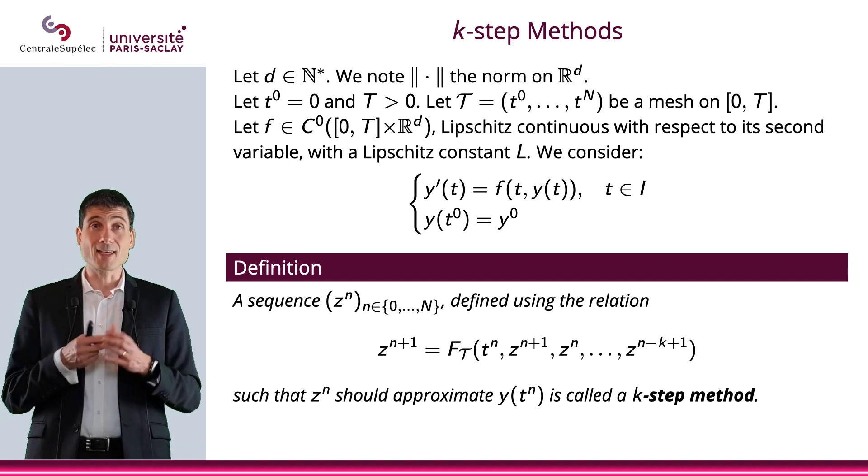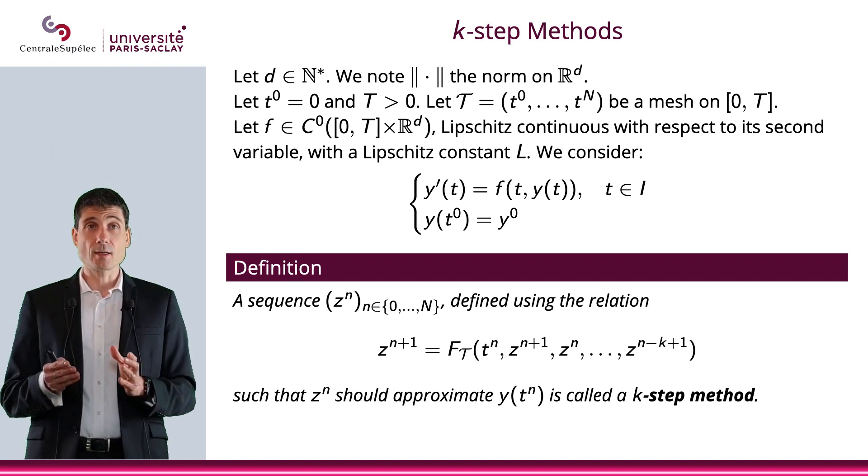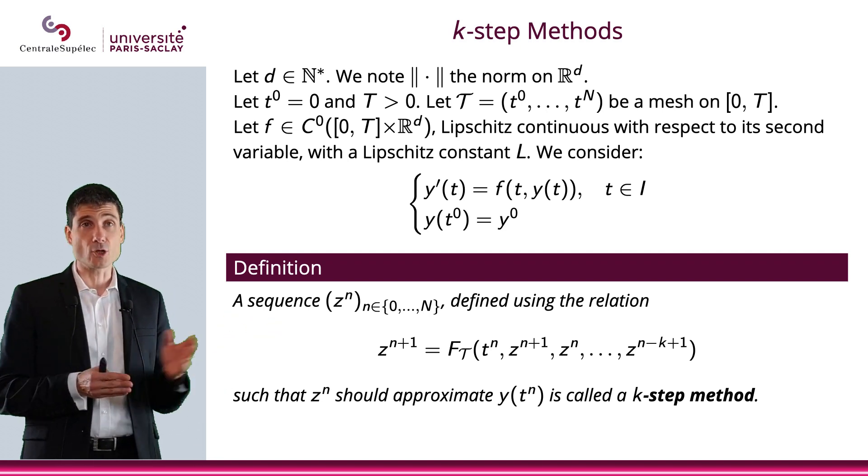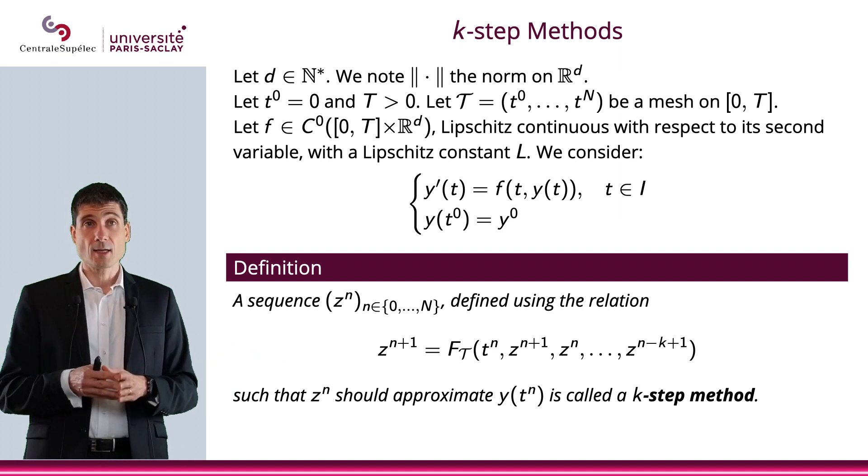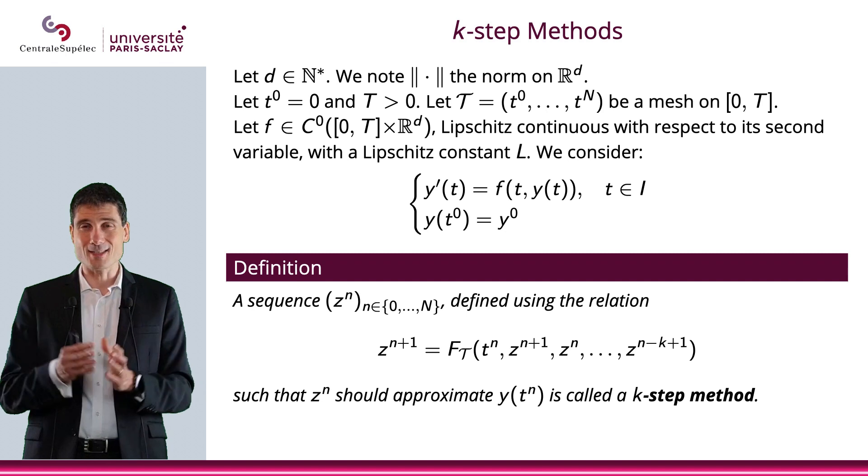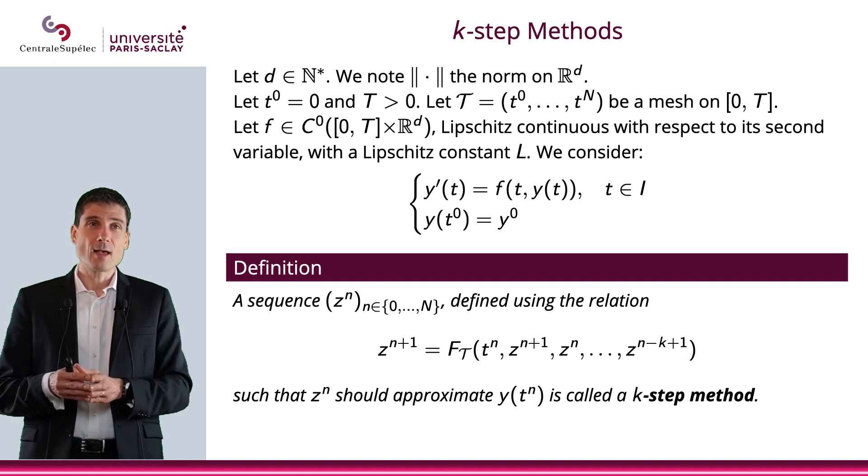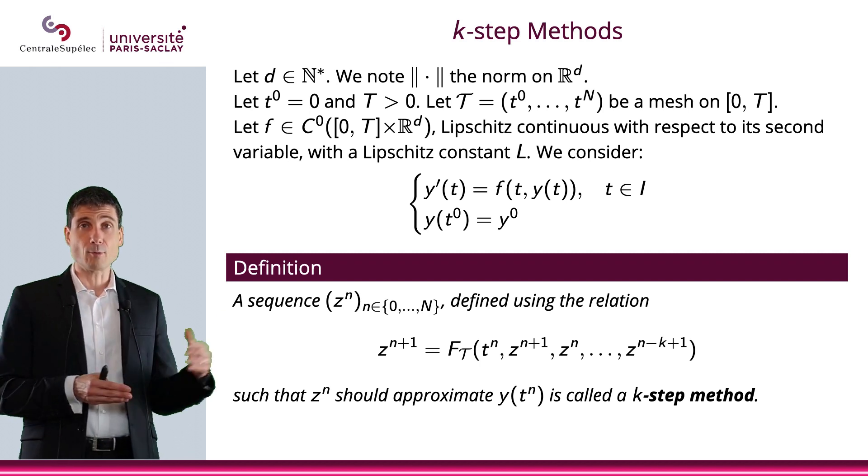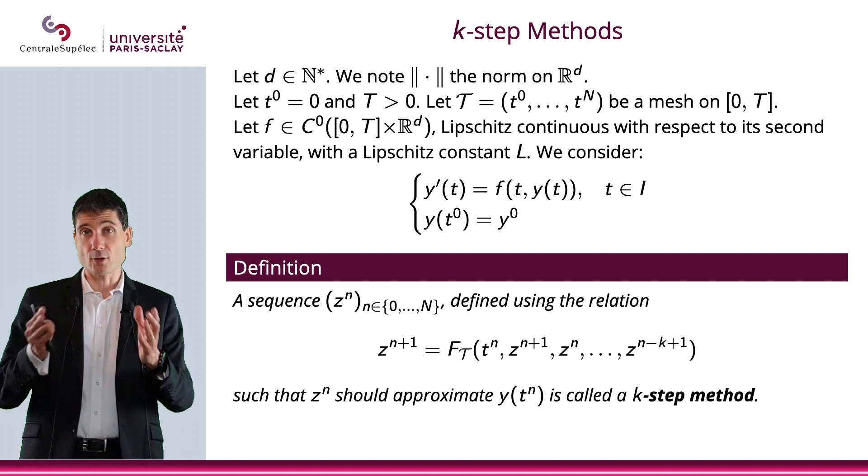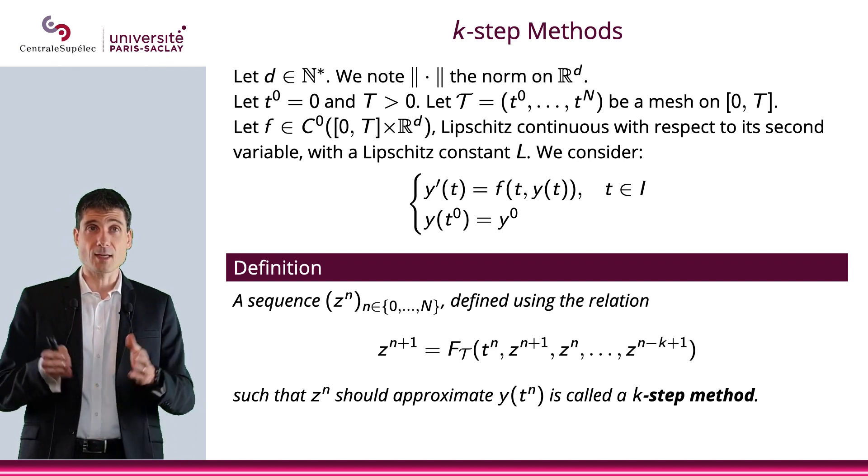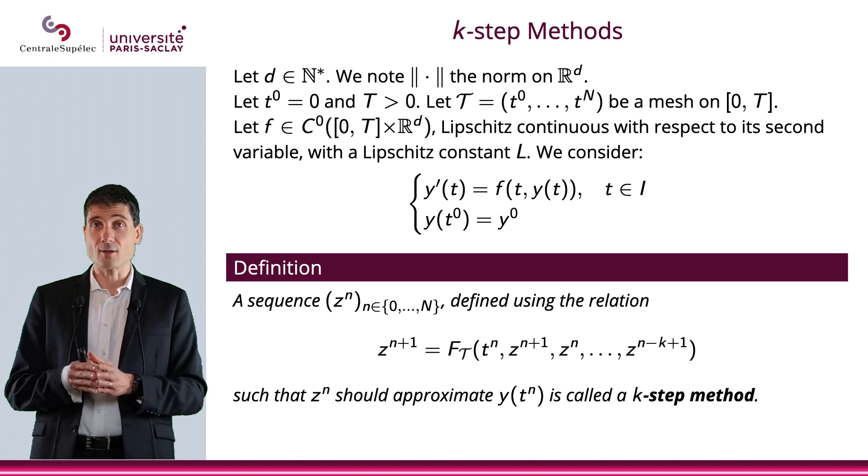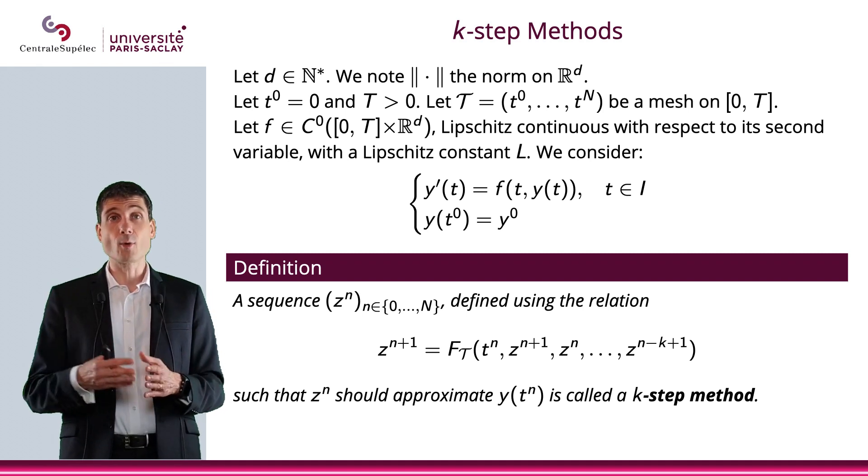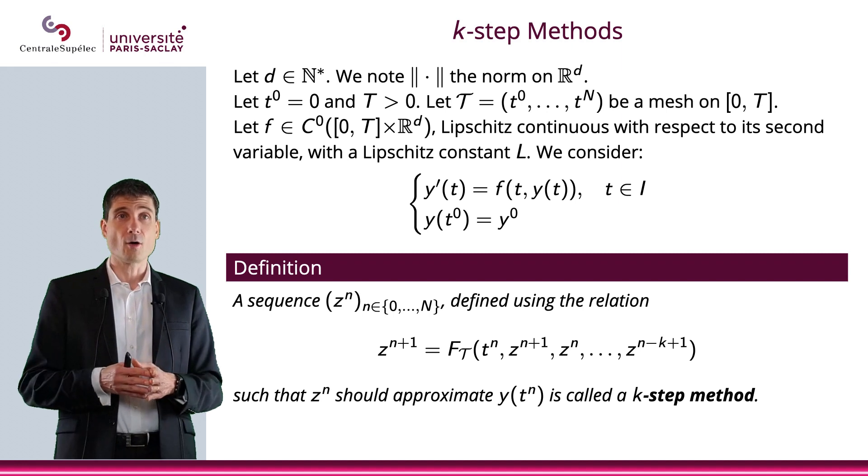Let's define what is a k-step method. We consider the ODE y'(t) = f(t, y(t)) with initial condition y(T^0) = y^0. d is the dimension of the space, and ||·|| denotes the norm on R^d. I would like to remind students that since R^d is finite-dimensional, all norms are equivalent. Not equal, but equivalent, which means converging in one norm means converging in another norm on R^d.